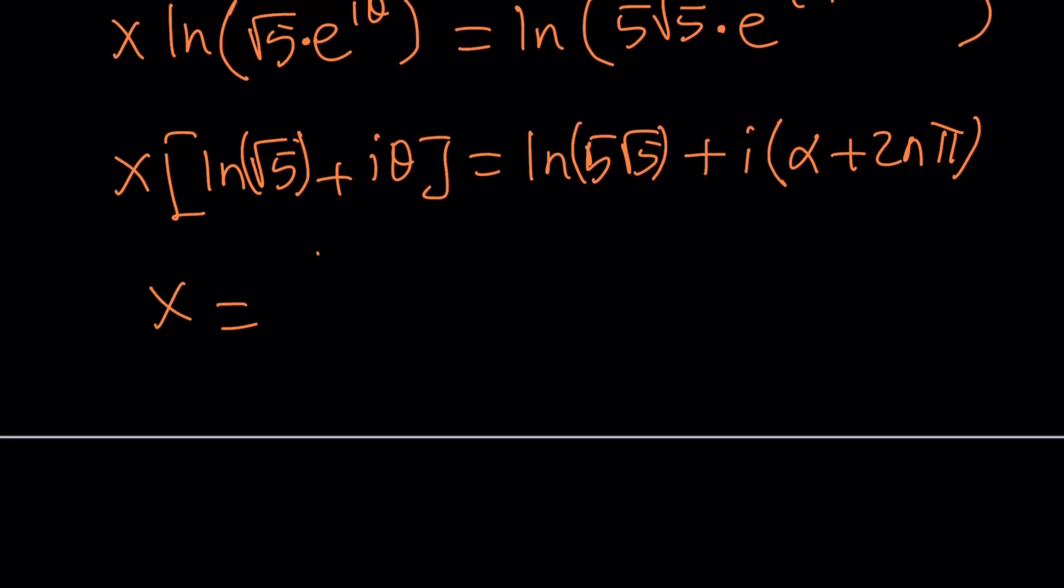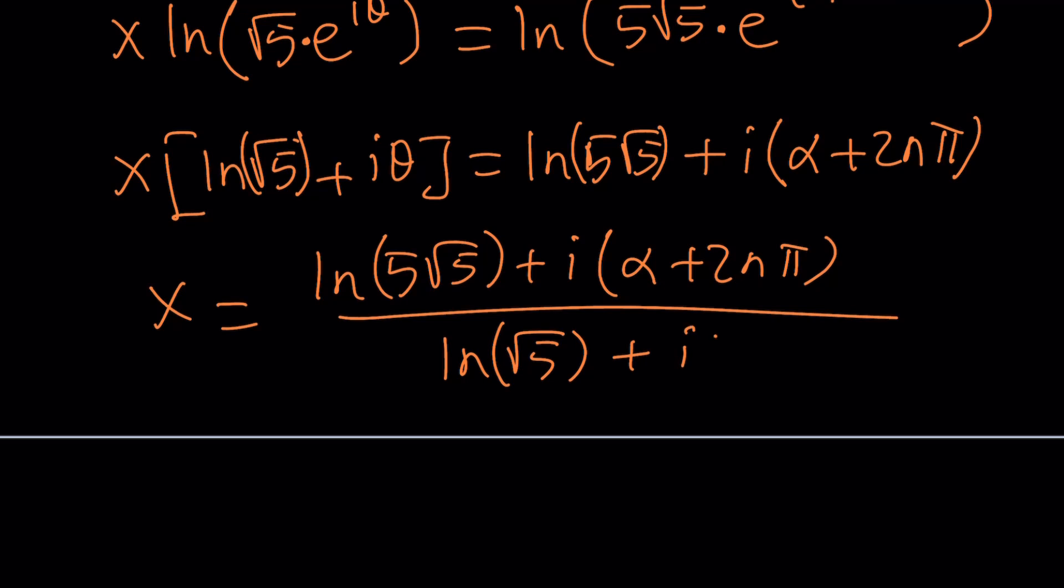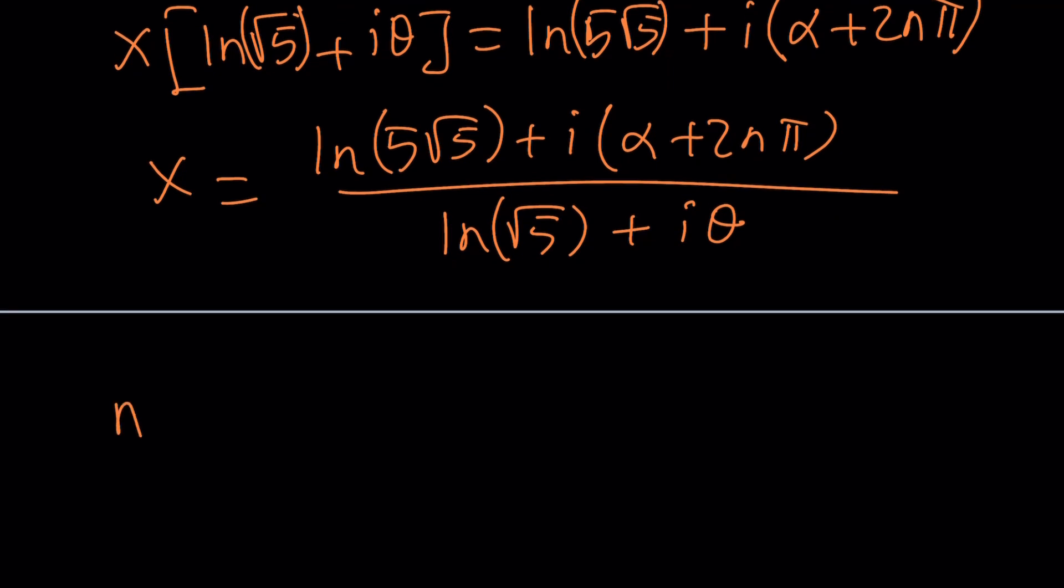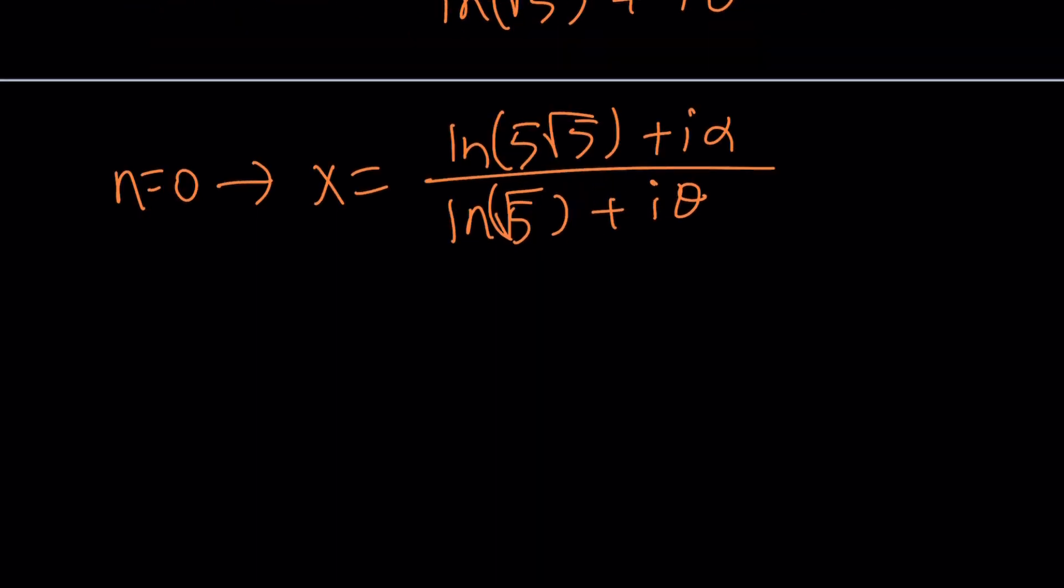So far so good. And now we're going to divide. And when you divide, you should get the general solution. But we'll talk about some specific solutions too. So let's go ahead and divide both sides by this. And now here's what happens. If n is equal to 0, you get the principal value. So that should be a valid solution, right? So if n is equal to 0, we get x equals ln root 5 plus i alpha divided by ln 5 root. I'm sorry, the top should be ln 5 root 5, ln 5 root 5 plus i alpha. And this is ln root 5 plus i theta. Now 5 root 5 can be written as root 5 cubed. So this can be written as 3 ln root 5 plus i alpha divided by ln root 5 plus i theta.